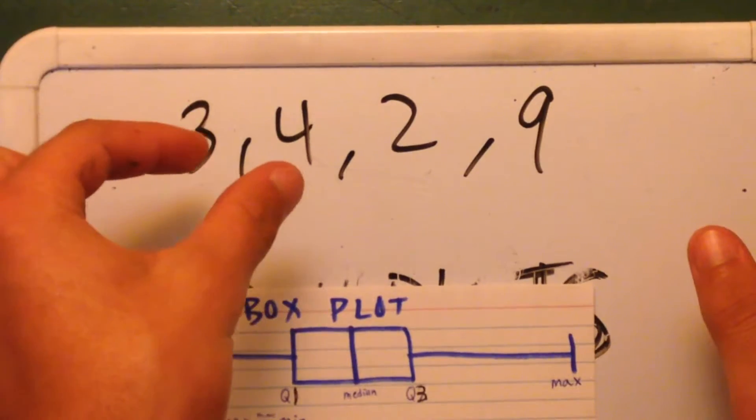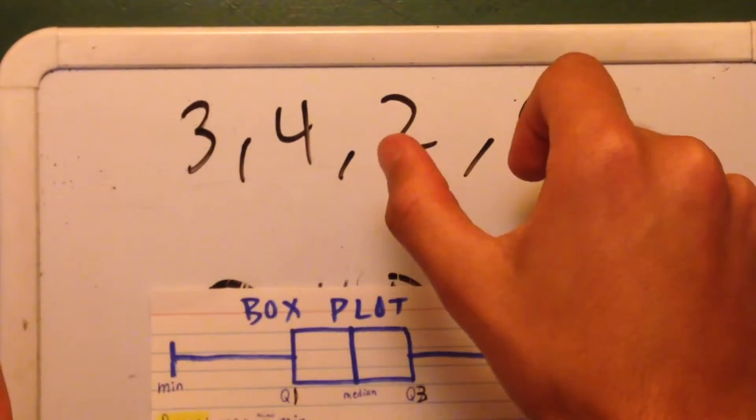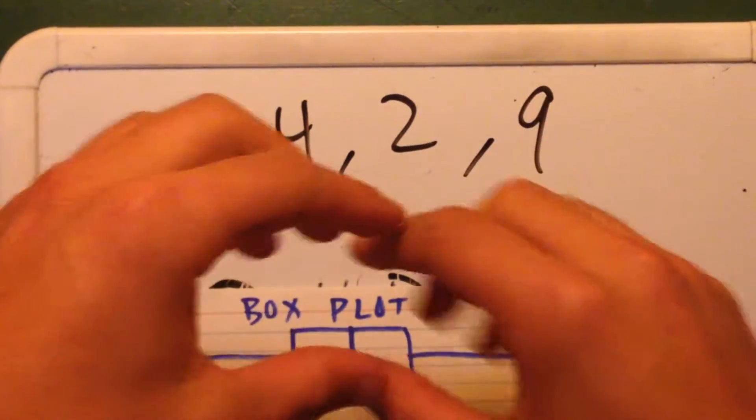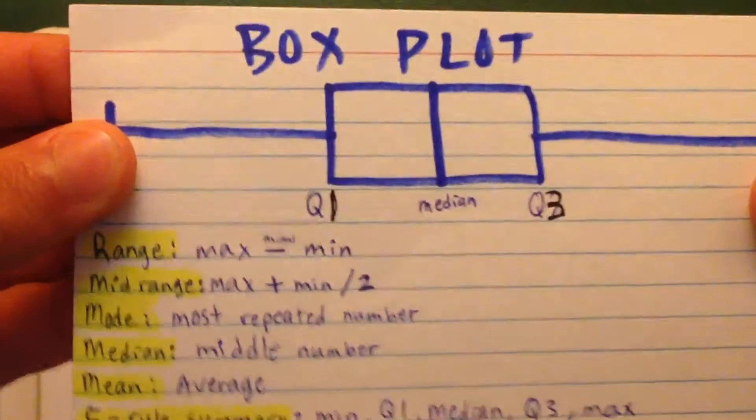So the median is 3. Quartile 1, which is the average of these two. Quartile 3 is the average of these two. And that's how you arrange all the numbers in a box plot.